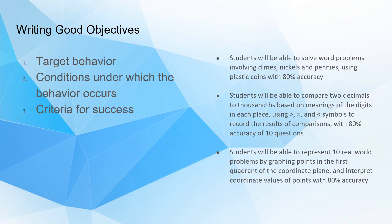Here's another example: students will be able to compare two decimals to the thousandths — that's the target behavior. They'll use greater than, equal to, and less than symbols to record the results — those are the conditions. The criteria for success is 80% accuracy on 10 questions. Another example: students will be able to represent 10 real-world problems by graphing points in the first quadrant of the coordinate plane and interpreting the coordinate values, again with 80% accuracy.